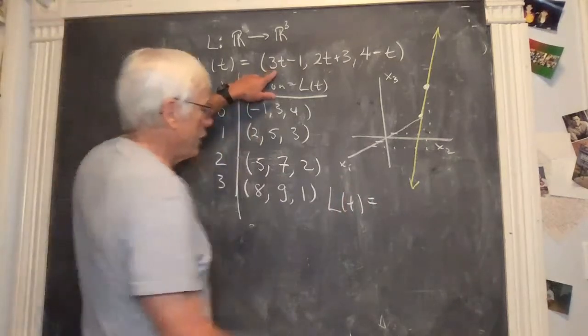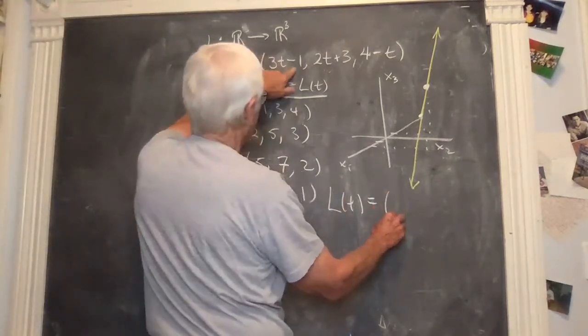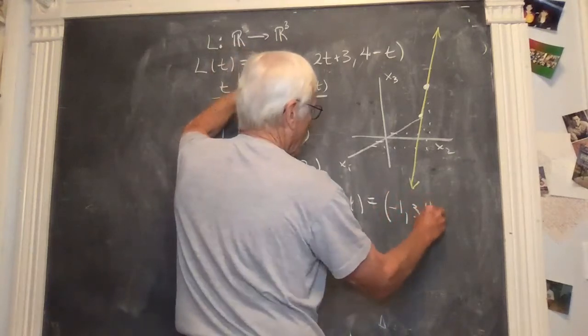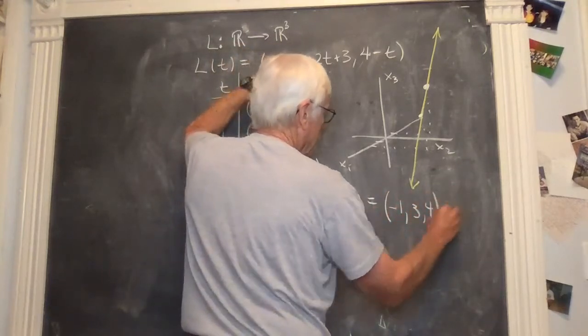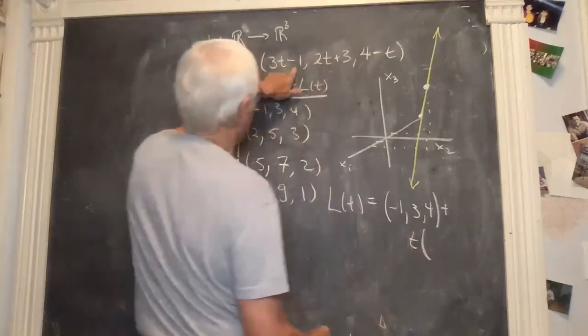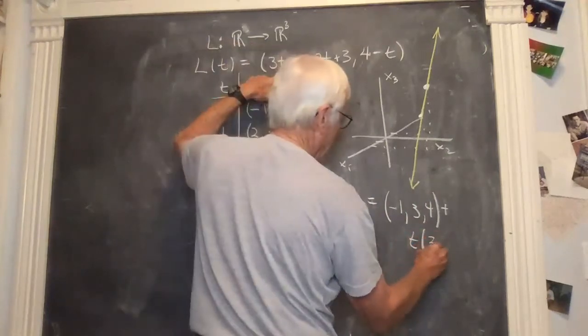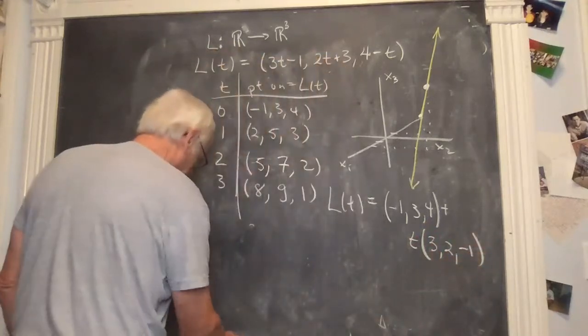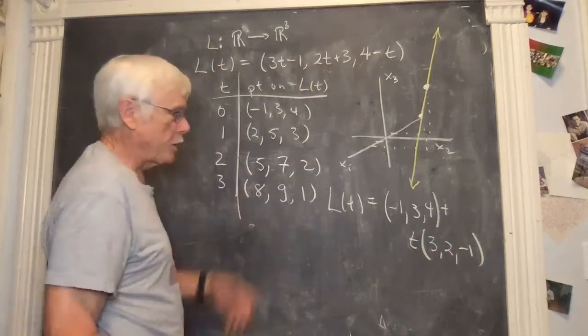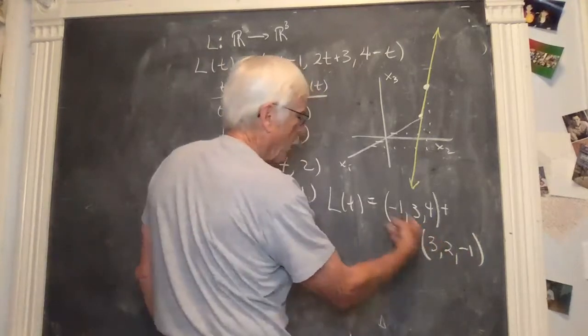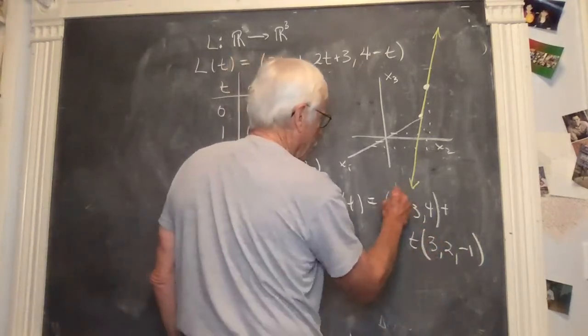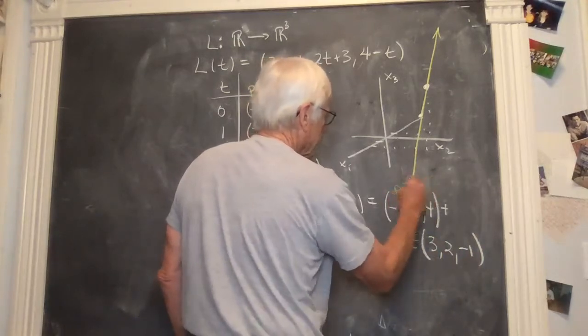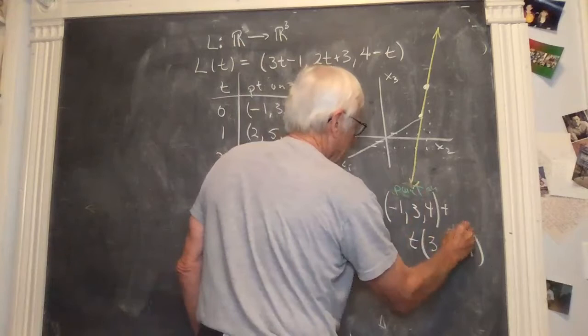We can write L of t in the point direction form, and that will give the direction. So separating this, if you separate out the constants, you get minus one, three, and four plus t times. And now this will be the direction three, two, minus one.